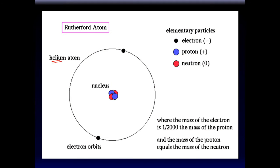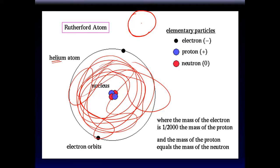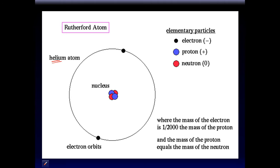One last thing: this Rutherford model is not an accurate depiction. Models give a conceptual representation, not a real one. Compared to the space electrons float in, the nucleus occupies almost nothing — 99% of the space in an atom is actually empty, like a playground for electrons moving about. The nucleus is a very tiny, dense part of the atom.